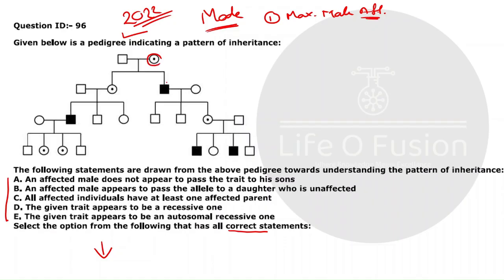The next clue: a dot inside a circle means the female is a carrier. If a female is a carrier, there is a chance her sons will be affected. Her daughters can be unaffected or can be carriers. A carrier daughter can come from an affected father or an affected mother. However, if both parents are affected, the daughter has a chance of being affected as well.